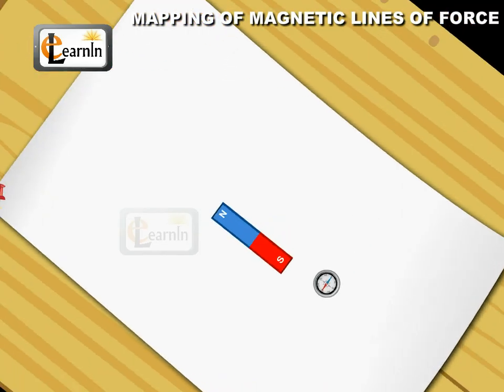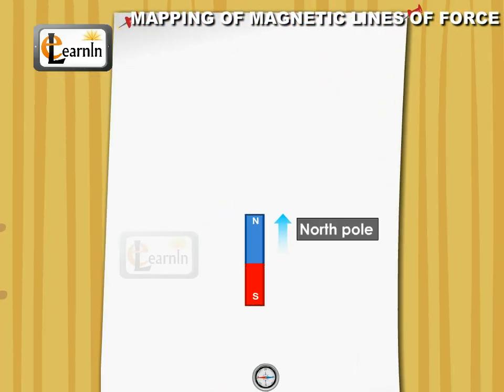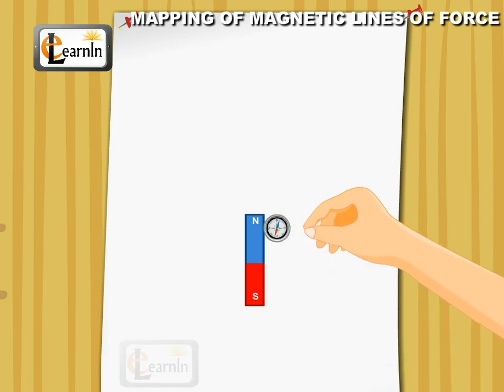Adjust the drawing board and the north pole of the bar magnet along the GN by using a compass. Place a plotting compass near the bar magnet.